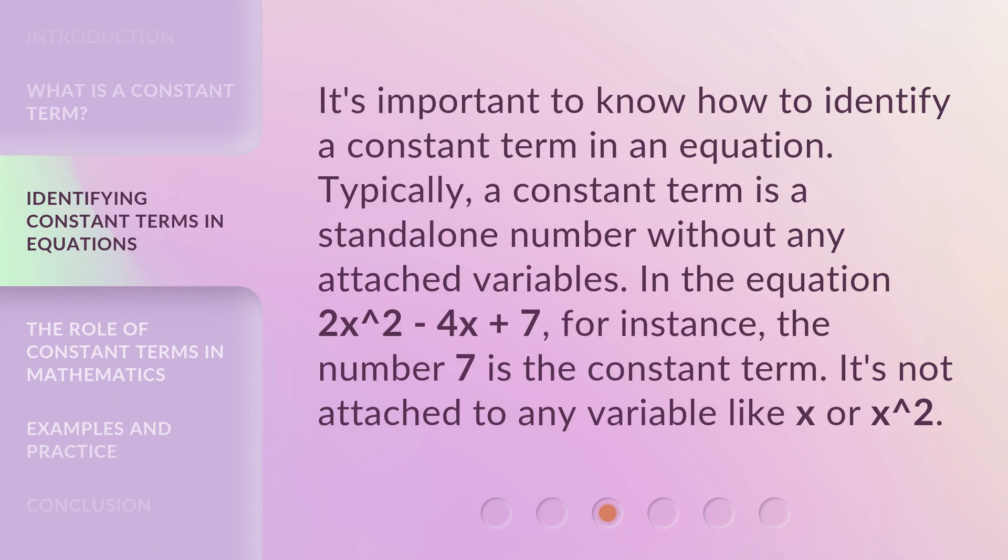It's important to know how to identify a constant term in an equation. Typically, a constant term is a standalone number without any attached variables. In the equation 2x² - 4x + 7, for instance, the number 7 is the constant term. It's not attached to any variable like x or x².